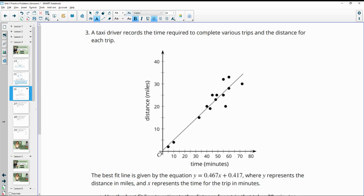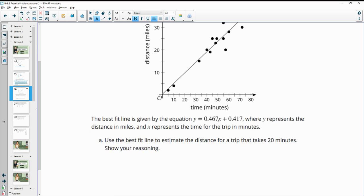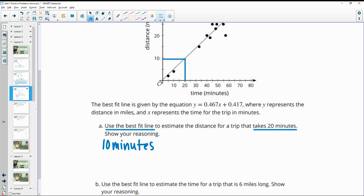Number three, a taxi driver records the time required to complete various trips and the distance for each trip. The best fit line gives this equation 0.467x plus 0.417, where y is the number of miles and x is the time. Use the best fit line to estimate the distance the trip would take for 20 minutes. I'm not sure if this question wants us to actually use the line or if it wants us to use the equation. But it does say use the best fit line, so I'm going to do that. That it takes for 20 minutes, so we go here to 20. And then if you go straight up to the line of best fit until you hit the line of best fit, then you can go over to the distance or the y-axis and it appears like that's going to be approximately 10 minutes for a 20-minute trip. So that would be using the actual line.